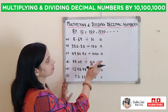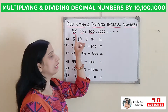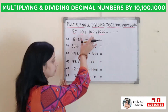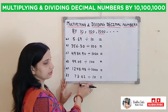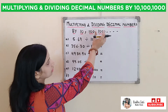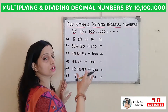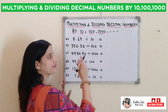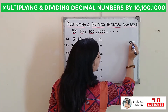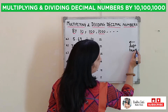Now we will do some questions on dividing decimal numbers by 10, 100, or 1000. Just remember that while dividing decimal numbers, our decimal will shift to the left hand side.